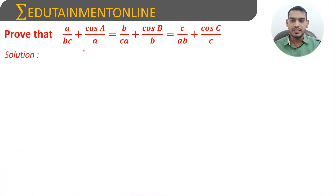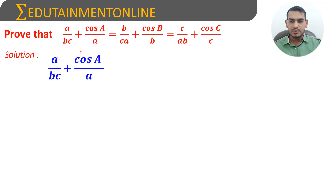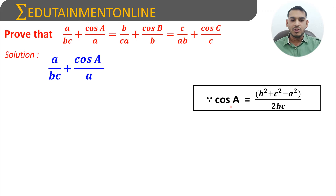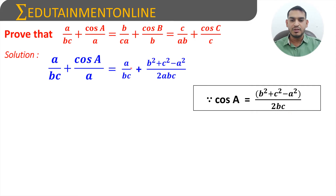We will take the first term, which is a/(bc) + cosA/a. From the cosine rule, cosA = (b² + c² - a²) / 2bc. Substituting the value of cosA, we get a/(bc) + (b² + c² - a²) / 2abc.